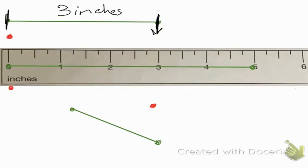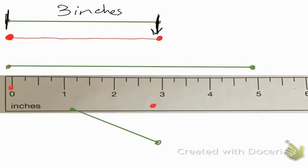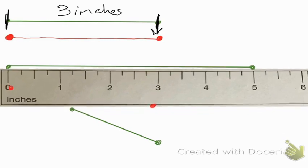Now I'm going to draw a congruent — same size, same shape — line segment. I'm going to make sure I'm holding my ruler nice and straight and sturdy, then start at the zero and stop at the three. I want to make sure that my line segment has a start point and an end point. You can go ahead and do that on your page. Pause the video if you need to.